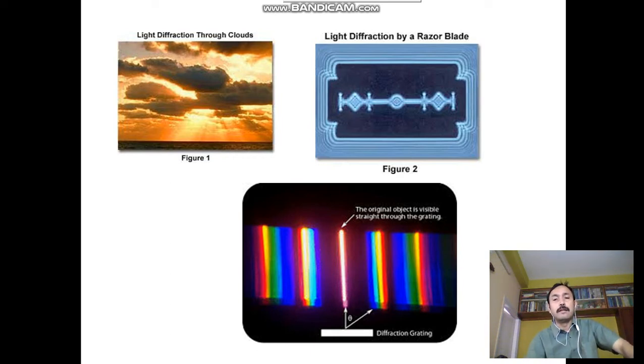Again, if a grating is placed on a spectrometer and light is made to fall on the gratings, then we will get this type of spectrum. This one is the color band of first order, this one is second order, and so on. And the intensity is diminishing.